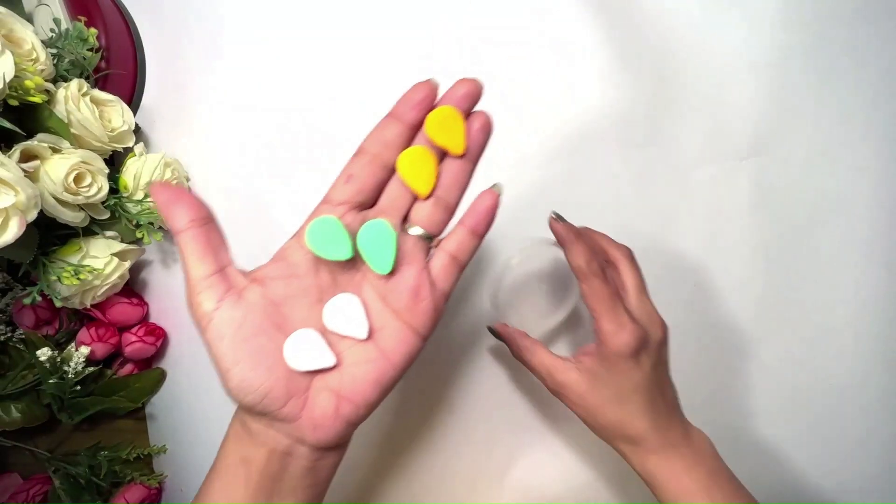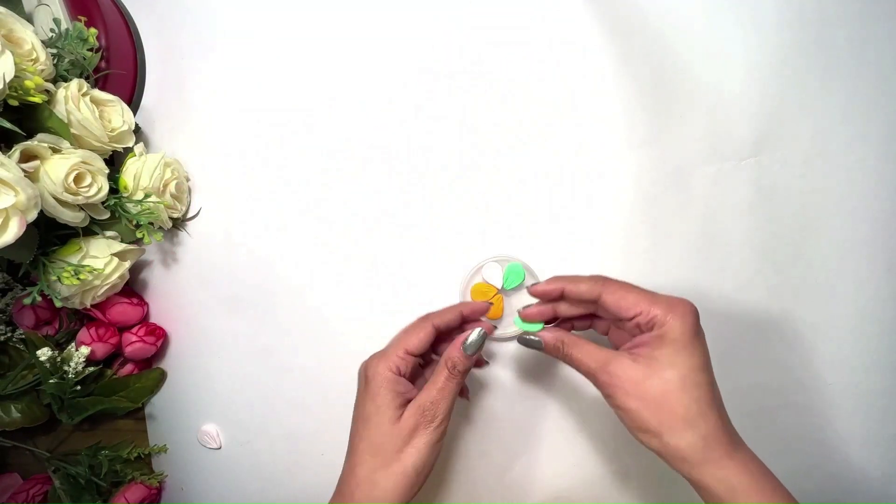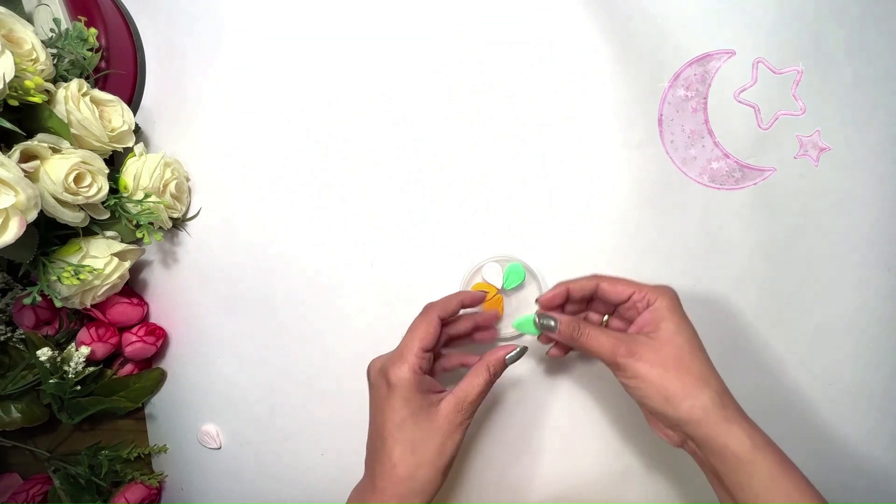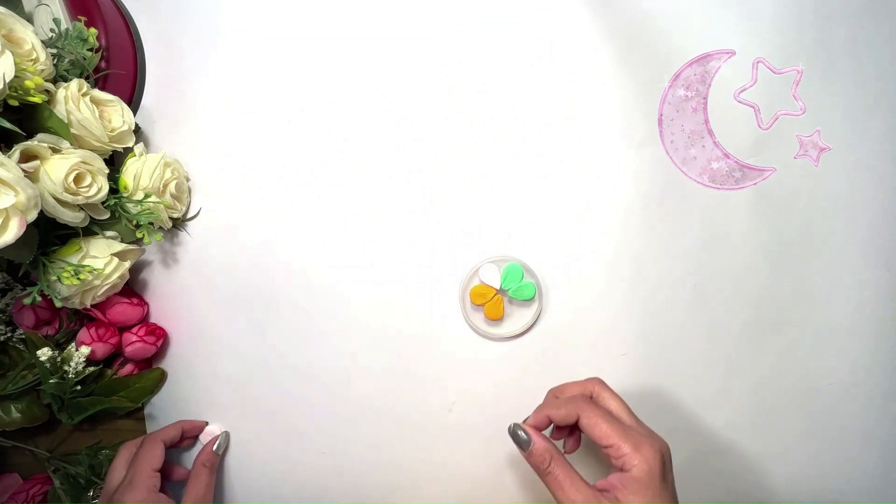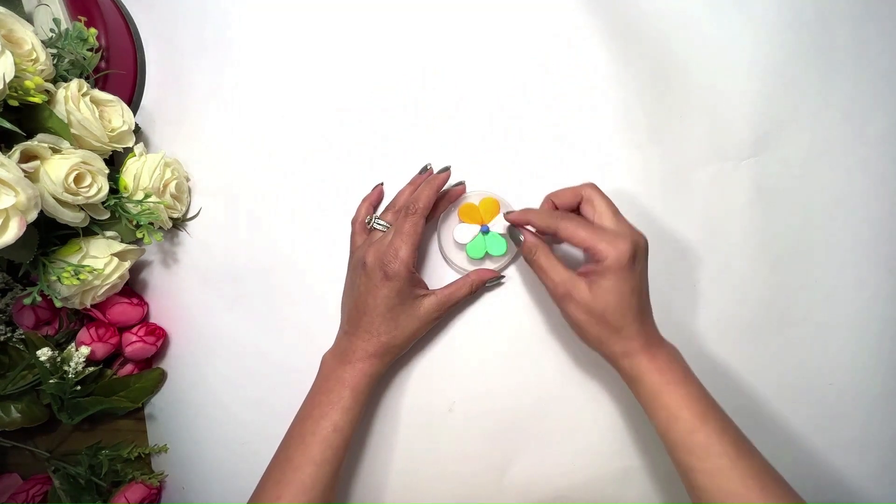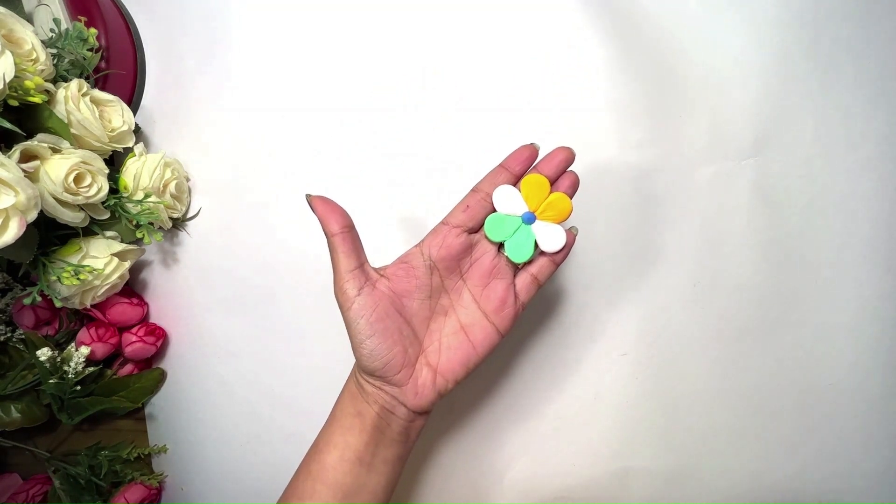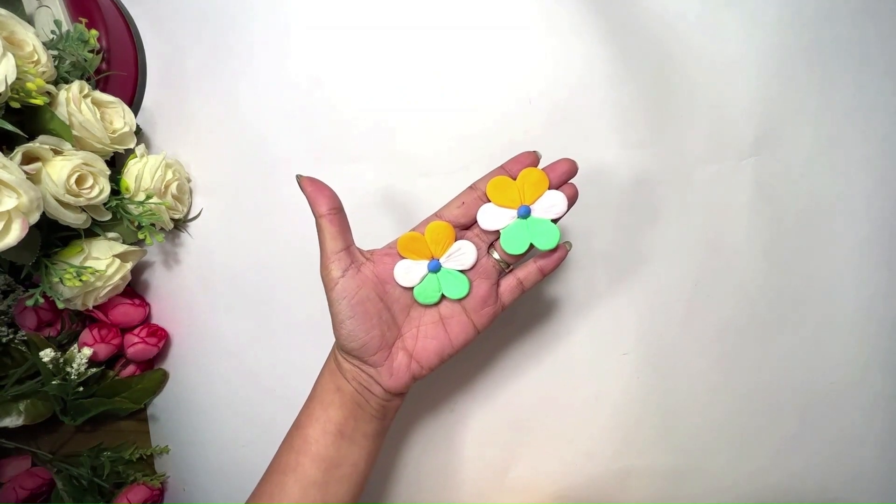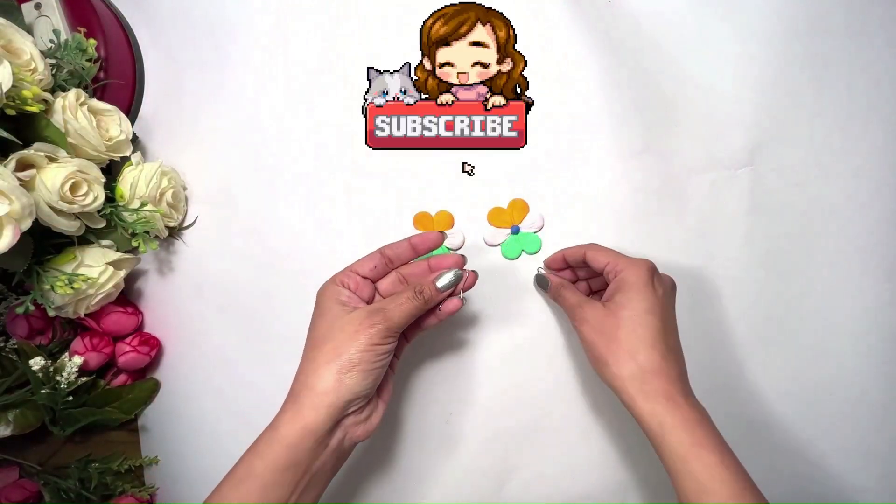Take two petals of each of the three colors and arrange them to form a flower. Then take a small ball of blue color and paste it on the center of the flower. Leave it for an hour to let the clay dry. You can make more such flowers to use in different accessories.